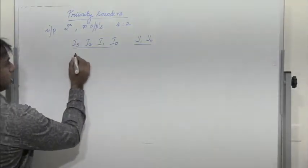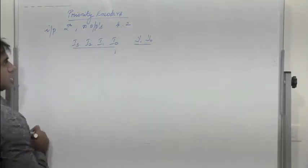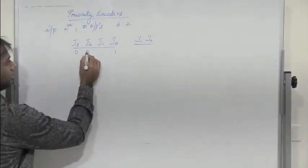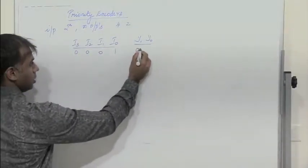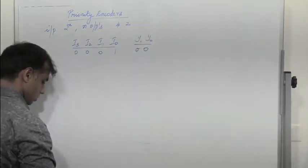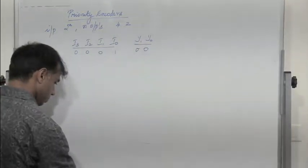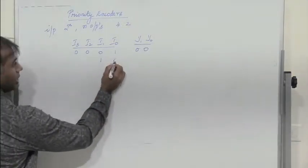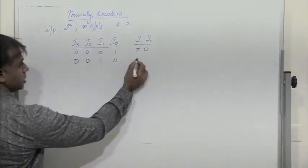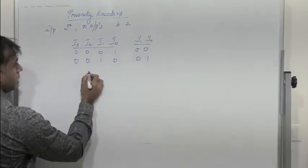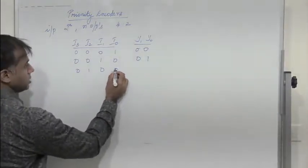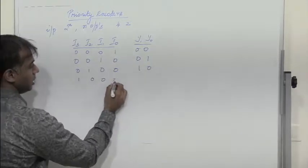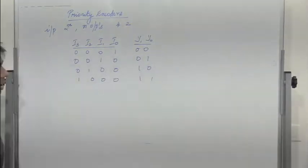In a general encoder, if i0 is 1 and all the remaining 3 inputs are 0, we get output 0,0. If i1 is 1 and all the remaining 3 are 0, we get 0,1. If i2 is 1 and the remaining are 0, we get 1,0. And if i3 is 1 and the remaining are 0, we get 1,1.